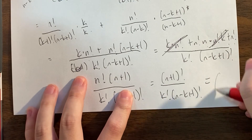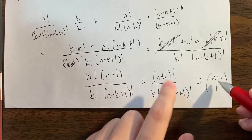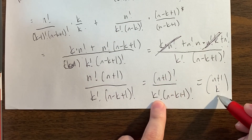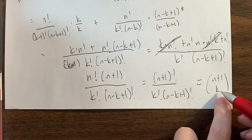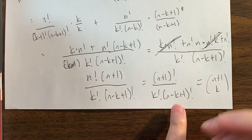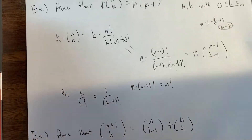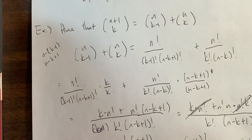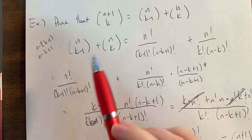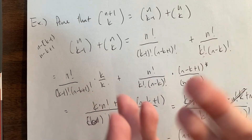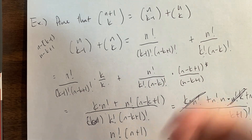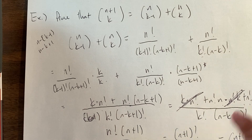This is exactly C(n+1, k), because it's (n plus 1) factorial over k factorial times (n plus 1 minus k) factorial — and n plus 1 minus k is the same as n minus k plus 1. So we've proved the important formula that allows us to build Pascal's triangle. We used factorial formulas and algebraic manipulation — the main step was combining the two fractions with a common denominator using properties of factorials.